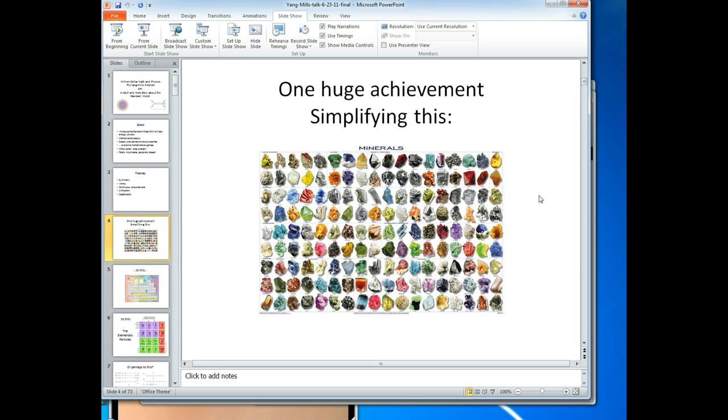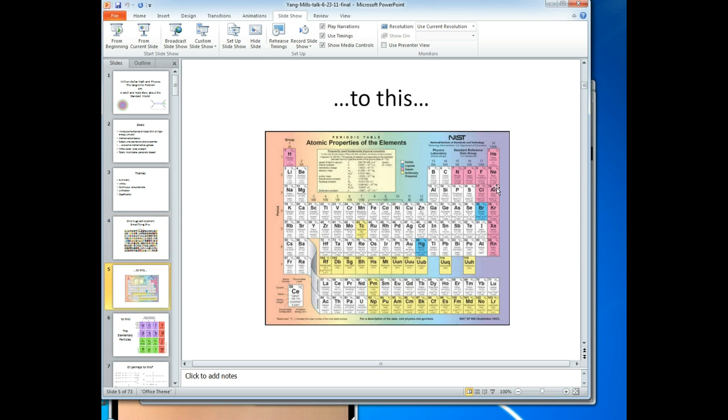One absolutely huge achievement of science from the last few hundred years is starting with this. All the different kinds of stuff out there in the world. This is just a small selection of all the different inorganic materials. Add that to all the organic compounds. It's just millions and millions of different kinds of stuff. How do you organize that? Well, in the 19th century, people figured out everything's made of different chemical elements. And there's fewer than a hundred of them, unless you make them in nuclear reactions, in which case you get a few more. And they come in patterns. This table, this is the periodic table. The rows and columns mean things. They come in all kinds of patterns.